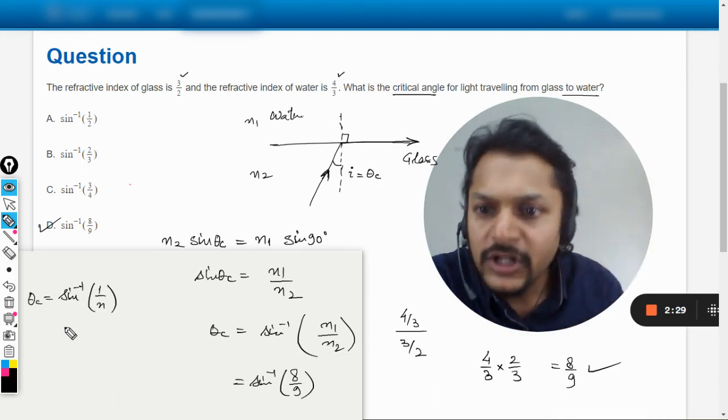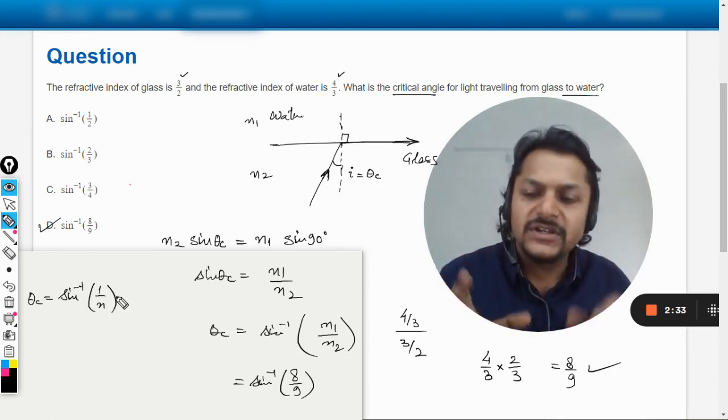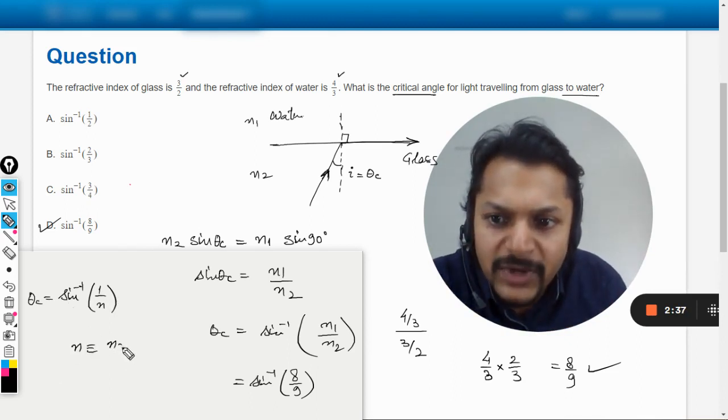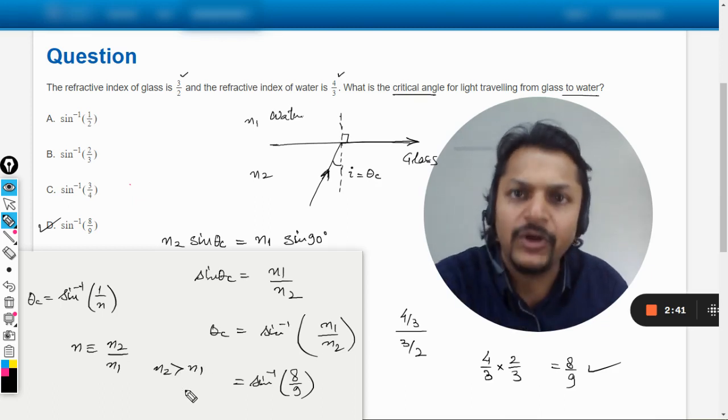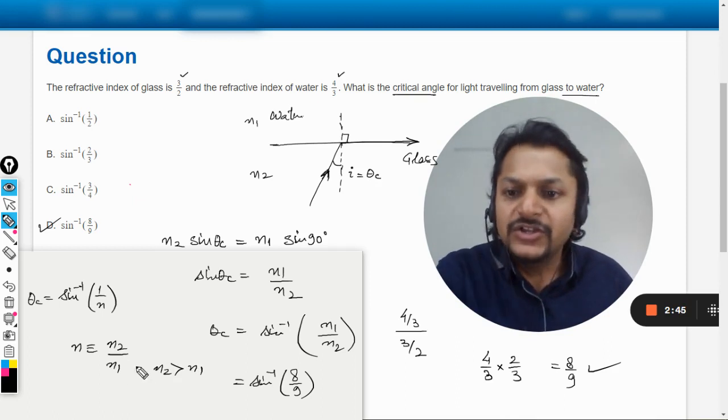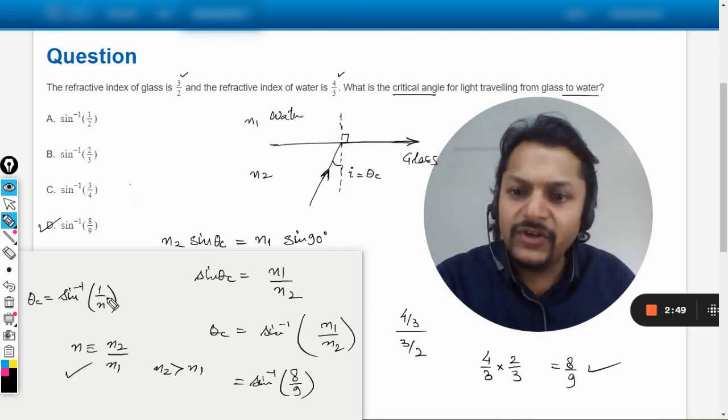Now wherever it is written n in our optics, wherever there is written n, n can always be replaced by n2 divided by n1, provided n2 is bigger than n1. Always remember that n should be greater than 1, okay? So if this condition is met you can just substitute n2 by n1 here and you see the same formula can be created if you know this concept.